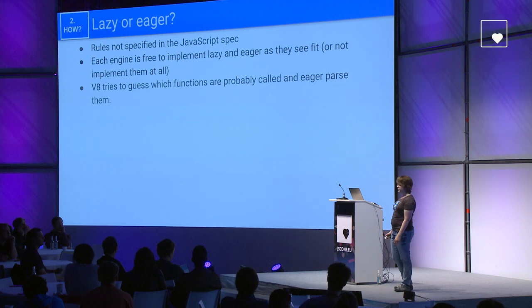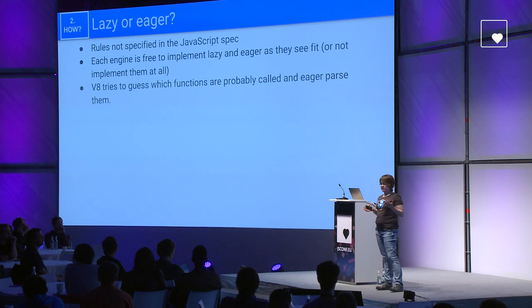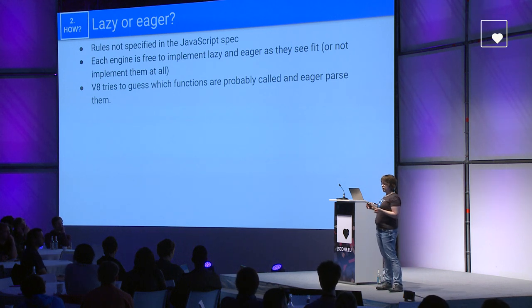These lazy versus eager rules are not specified in the spec. Each engine is free to implement them as they see fit, or they don't need to implement lazy parsing at all. V8 just tries to guess based on the syntax which functions are probably called, then eager parse those and lazy parse the rest.